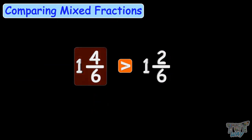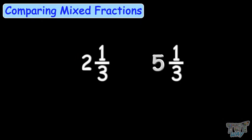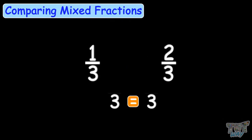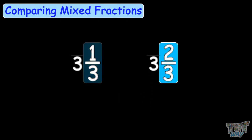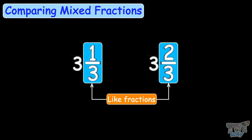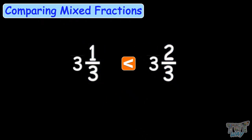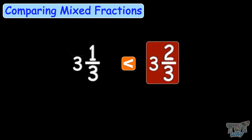Now let's have some more comparisons. Which of the following mixed numbers is bigger? The one with the bigger whole number, so this mixed fraction is bigger. Now which of these mixed fractions is bigger? The whole parts are the same here, so we will compare the fraction portions: 1 by 3 and 2 by 3. These are like fractions, so we compare only the numerators. 2 is bigger than 1, so 2 by 3 is bigger than 1 by 3, and this mixed number is the bigger number.